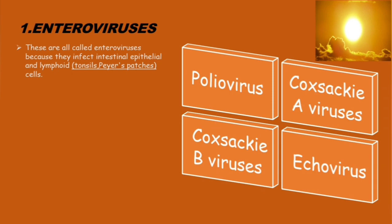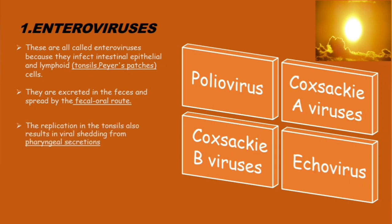These enteroviruses are called enteroviruses because they infect the intestinal epithelial cells — also known as enterocytes — and the lymphoid cells, specifically the tonsils and Peyer's patches. They are excreted in the feces, so they spread by the fecal-oral route. Replication in the tonsils also results in viral shedding from the pharyngeal secretions.